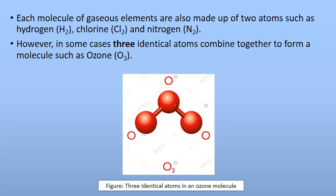What happens when three atoms of oxygen combine? A new molecule is formed: ozone (O3). So O2 is oxygen gas, a single O is the element oxygen, and O3 is ozone gas. If asked how many atoms are present in an ozone molecule, the answer is three. How many atoms are present in an oxygen gas molecule (O2)? The answer is two.